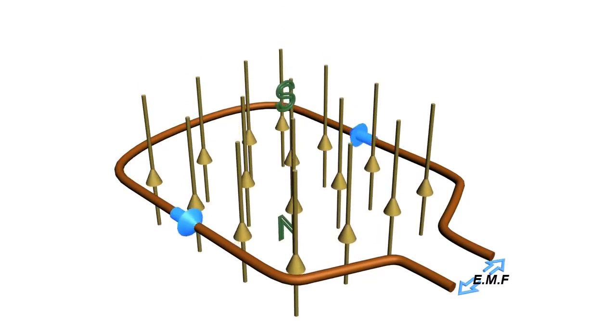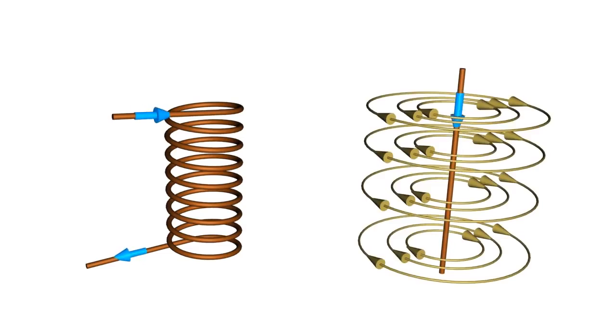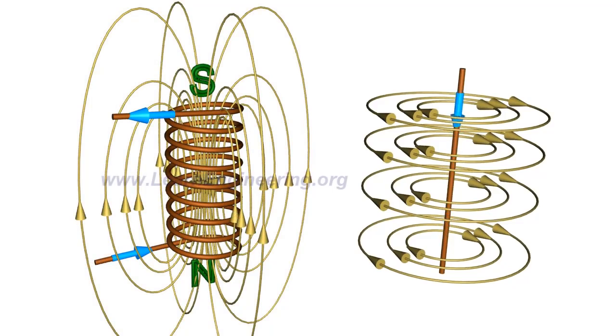Such a fluctuating magnetic field can easily be produced by a coil and an alternating EMF system. A current carrying conductor produces a magnetic field around it. The magnetic field produced by a coil will be as shown in the figure.